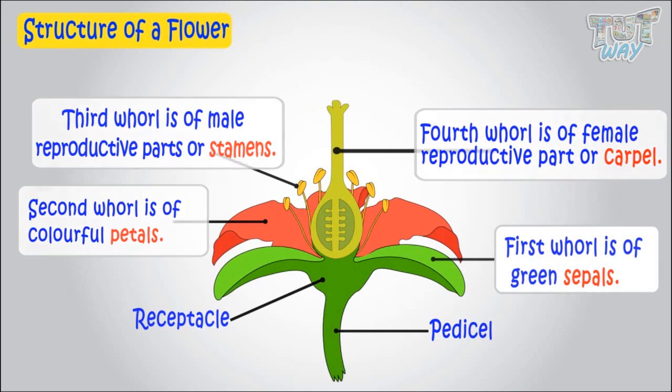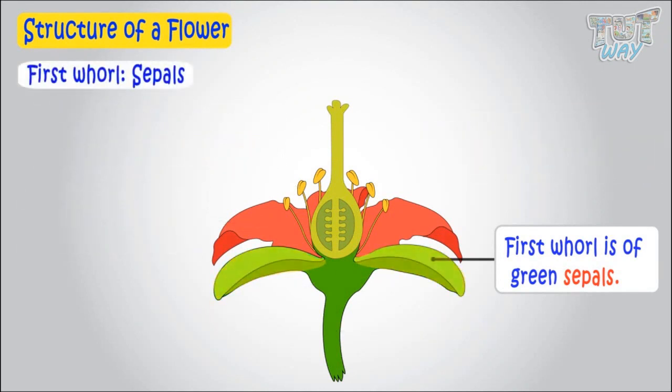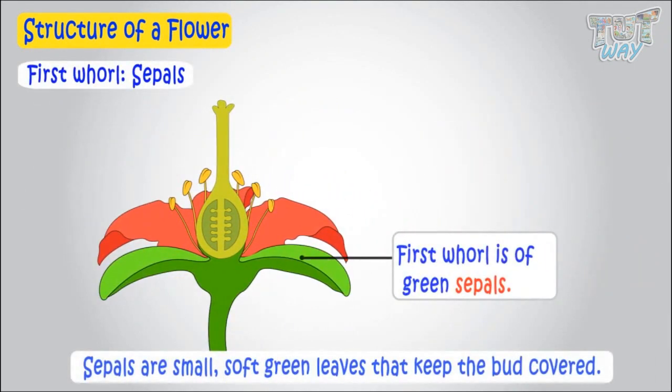First whorl is of sepals, which are small, soft green leaves that keep the bud covered. When the bud opens,